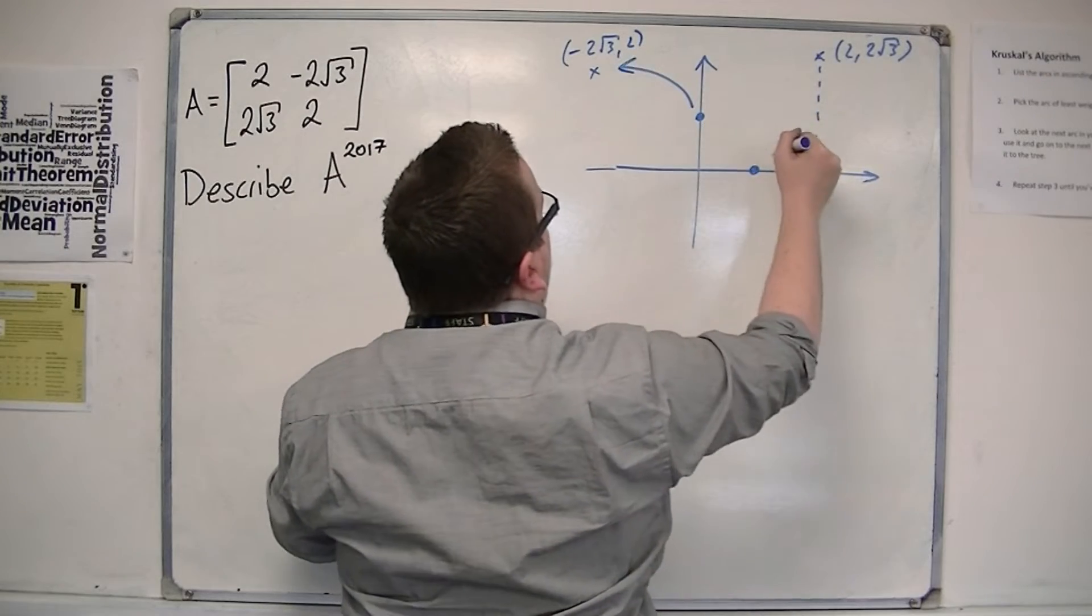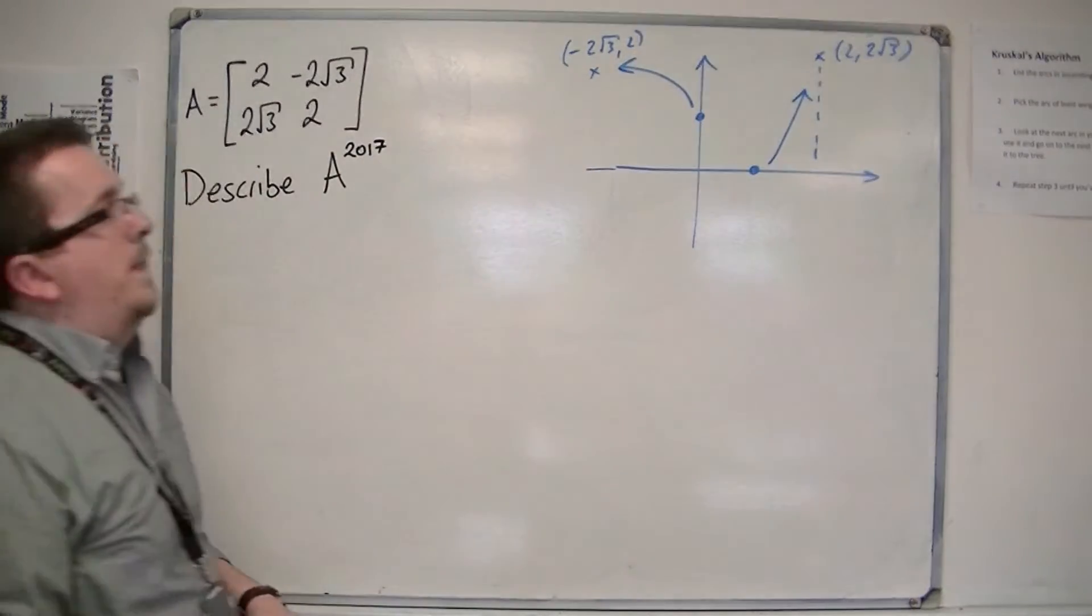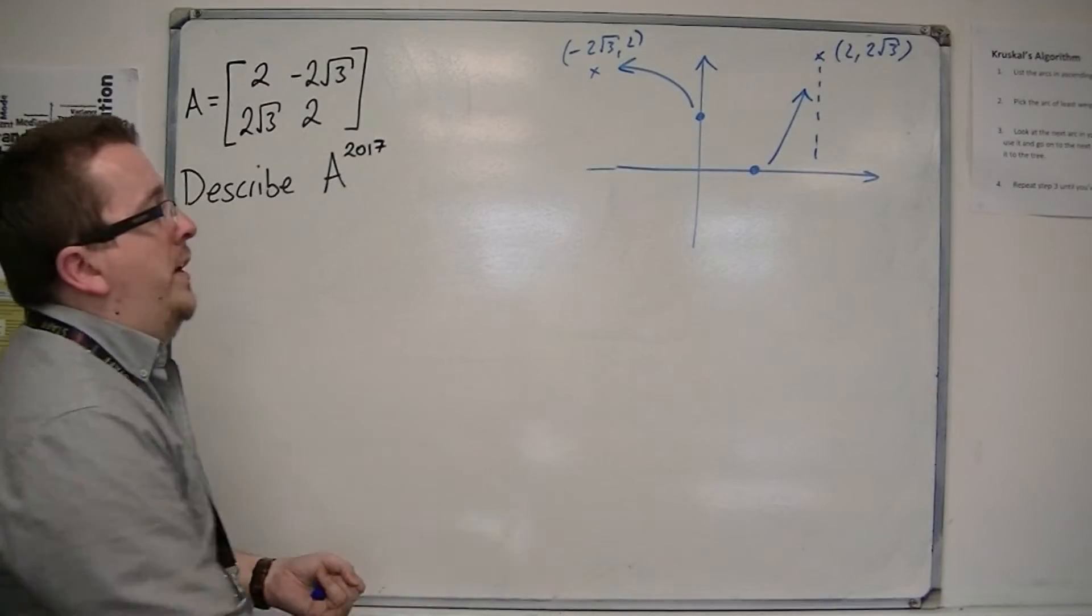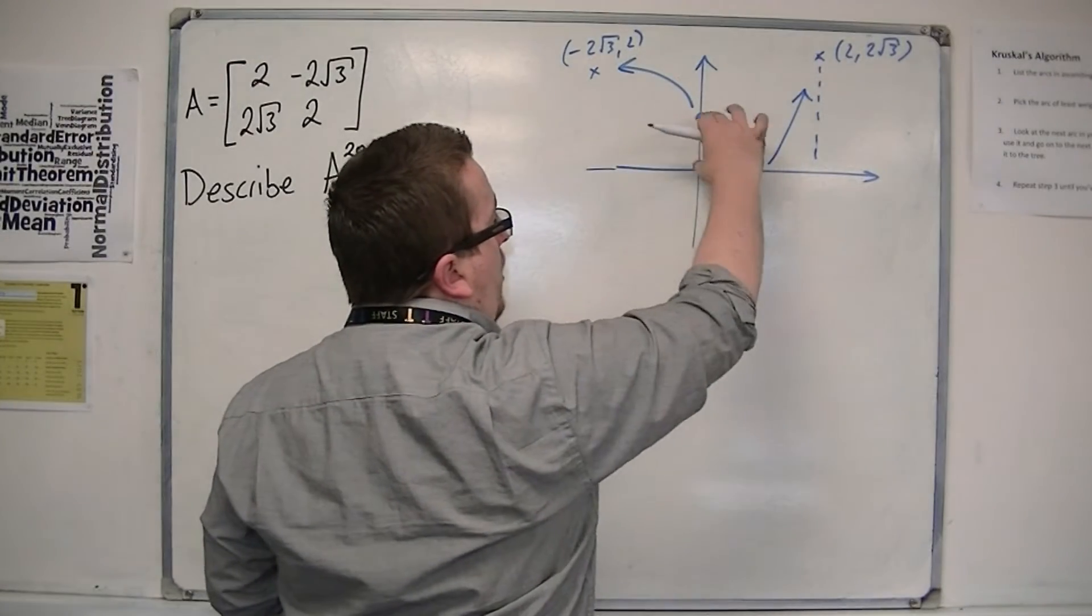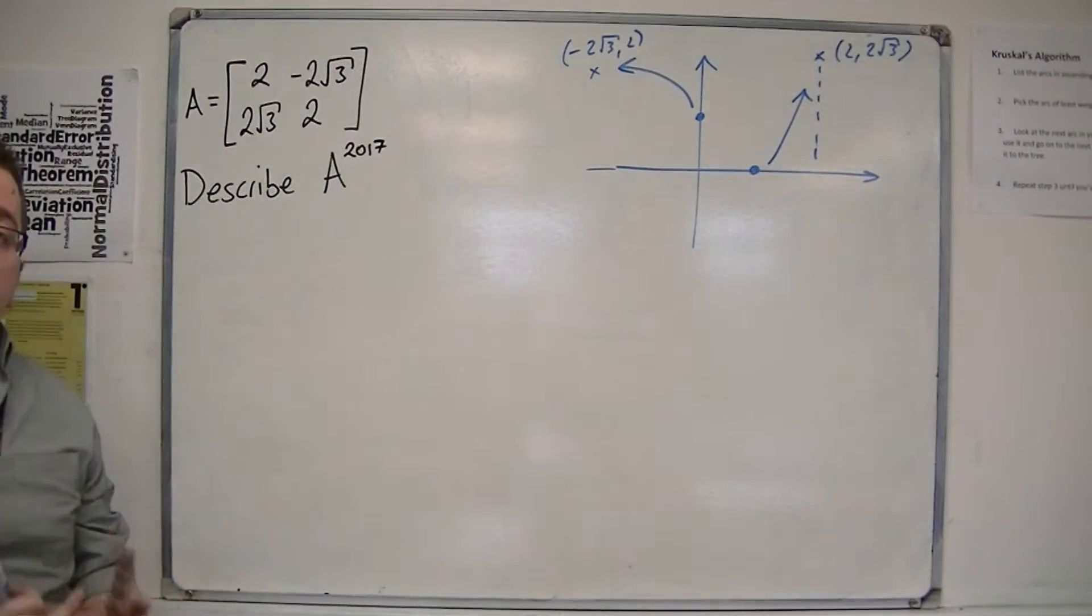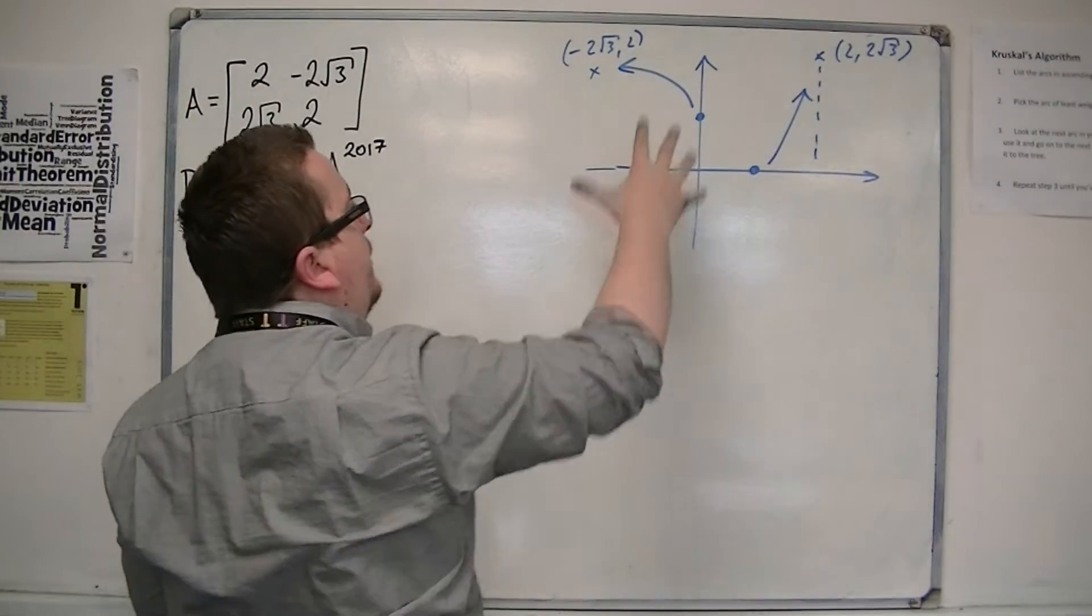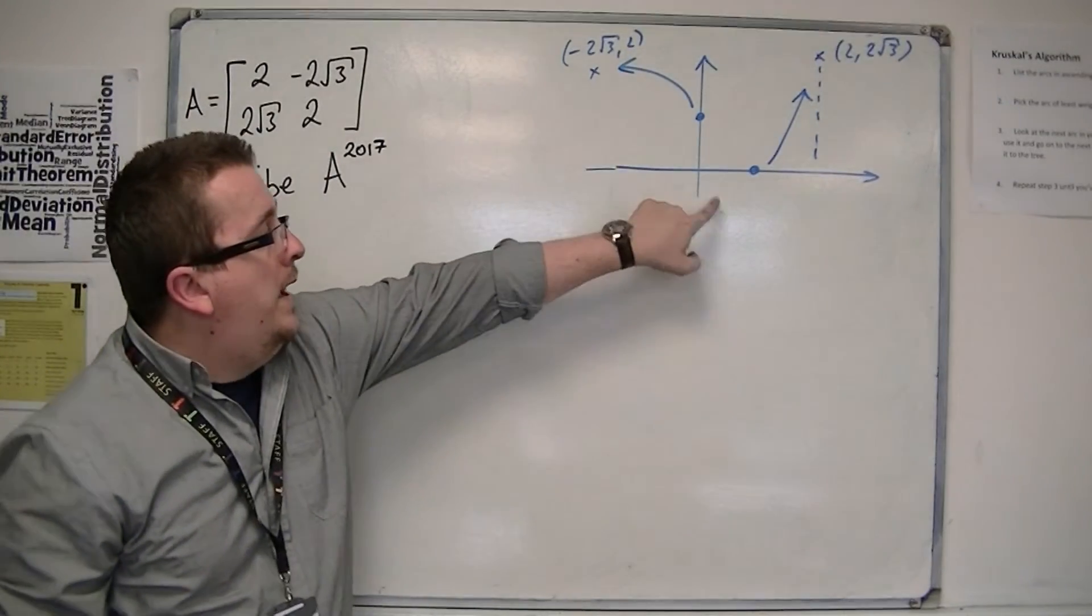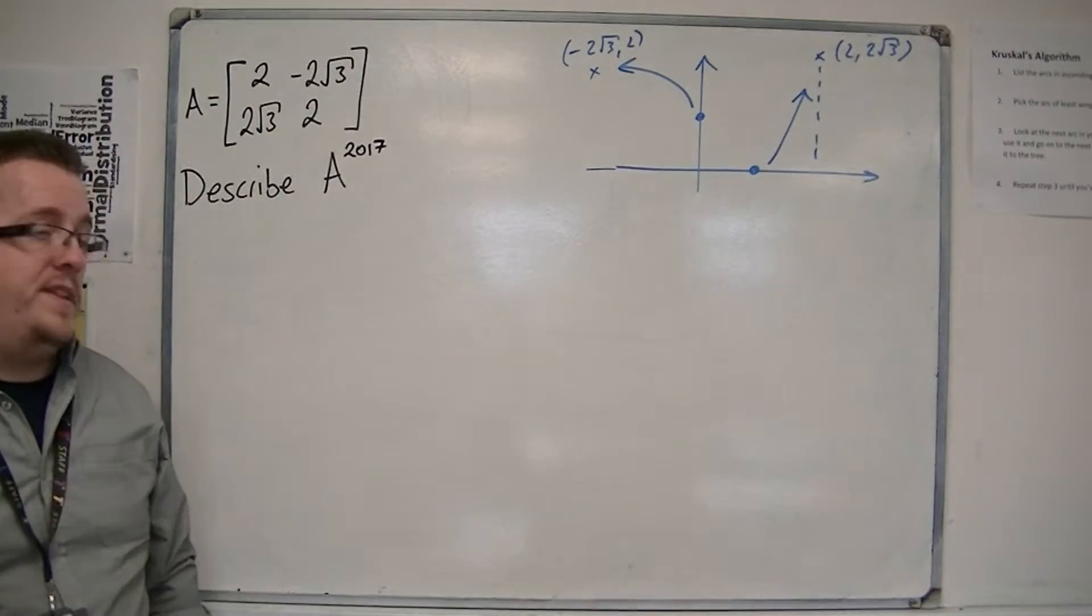So you can see, just by a quick diagram, that we have a stretch involved, because these points were 1 away from the origin, and now they've been stretched out. And it's also rotation, because they're both moving in the same direction. Now, first of all, we need to define what that scale factor of the enlargement is.